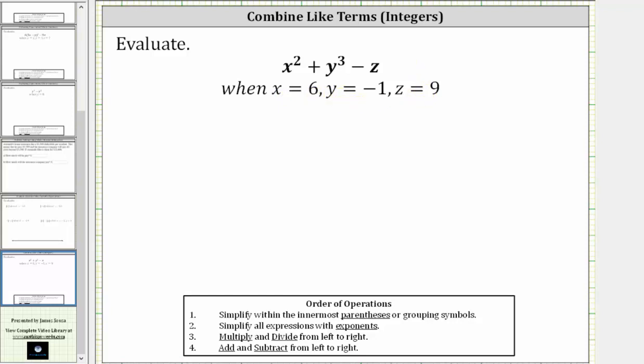To do this, we first perform substitution. We substitute six for x, negative one for y, and nine for z, and then evaluate the expression following the order of operations.